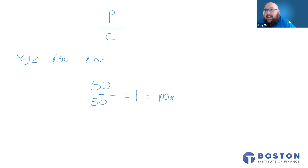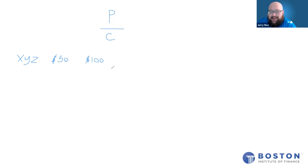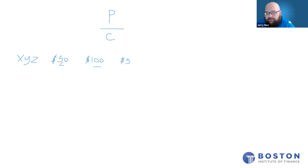Now let's make it a little bit more challenging. I would call that a level zero holding period return question. Let's do a level one. In addition to buying it for $50 and selling it for $100, let's say that this stock also paid a $5 dividend while they held it. So let's find out what their profit is. They sold it for $100 and they bought it for $50, so $100 minus $50 is $50. $50 plus $5 in dividends means that their profit is now $55, because we got the $50 in profit from the sale plus $5 in dividend profit.